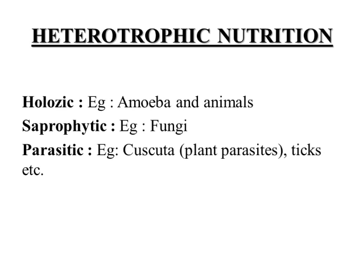Heterotrophs are organisms that cannot manufacture their food on their own because they do not contain chlorophyll pigment, so they depend upon other organisms like producers, plants, and some animals for getting their nutrition. Plants contain chlorophyll pigments so they can perform photosynthesis and manufacture their own food. As heterotrophs depend upon other organisms, this type of nutrition is known as heterotrophic mode of nutrition.